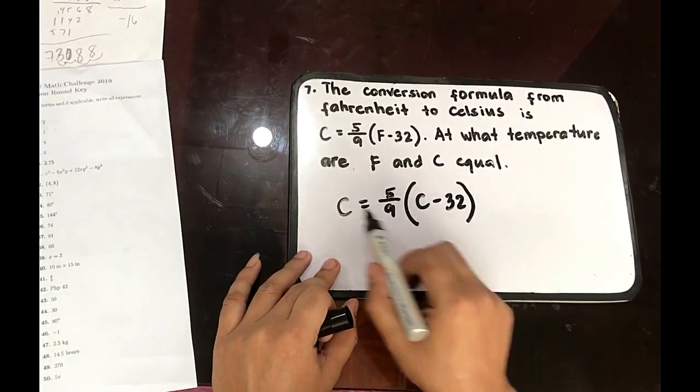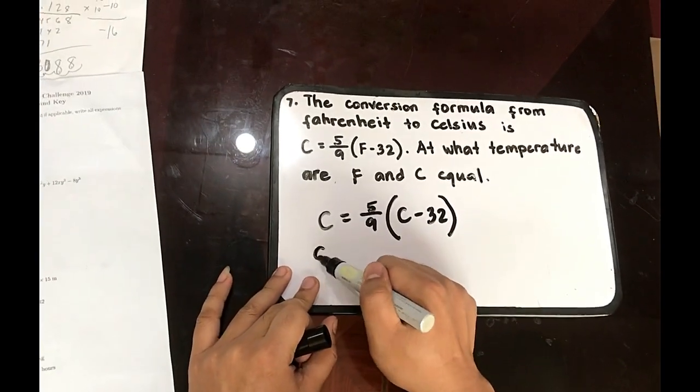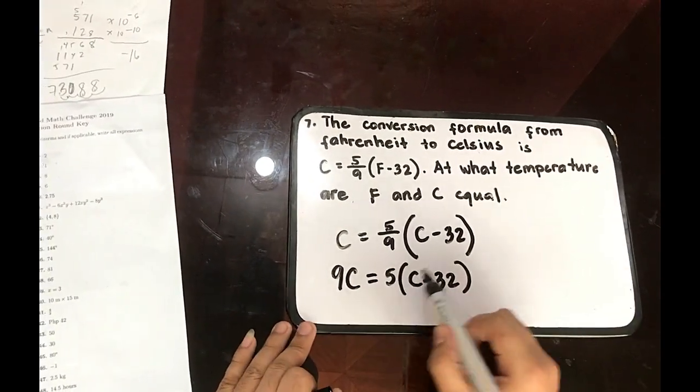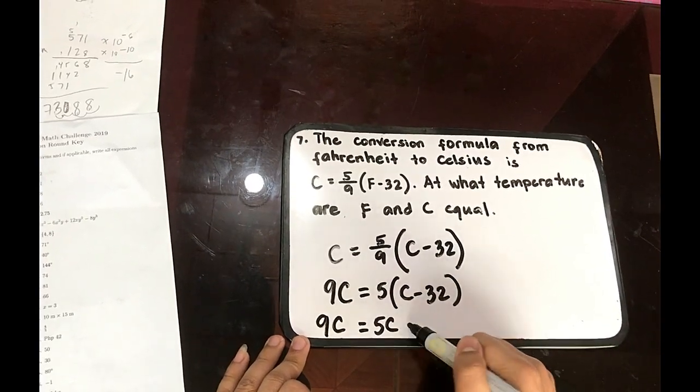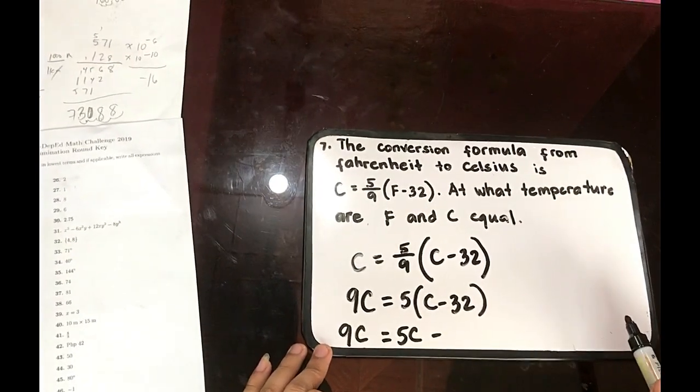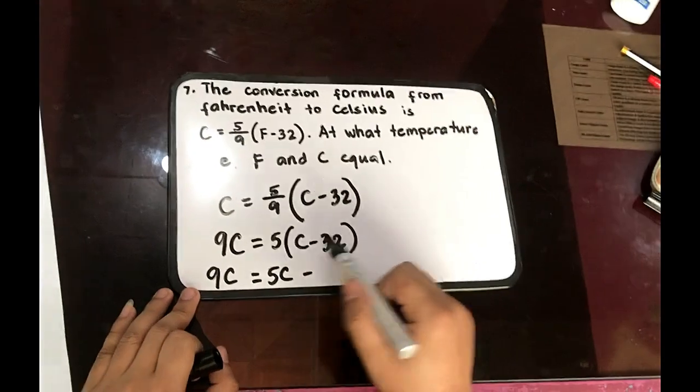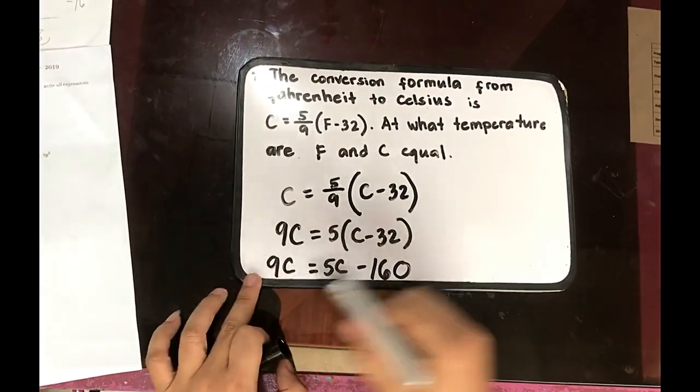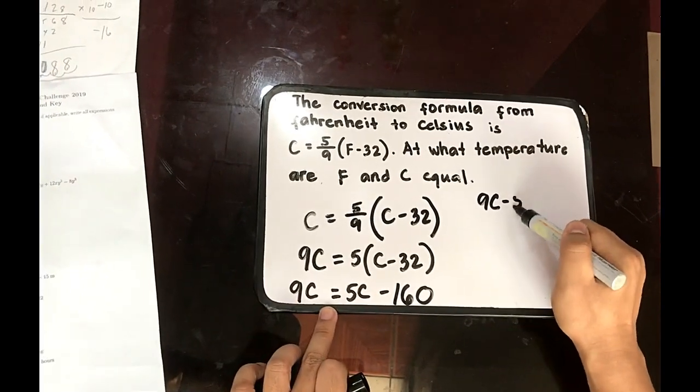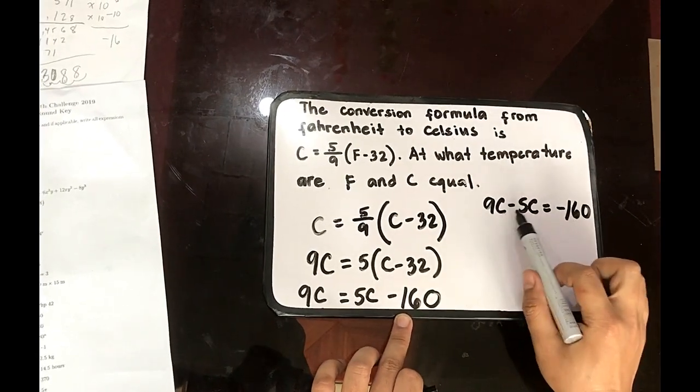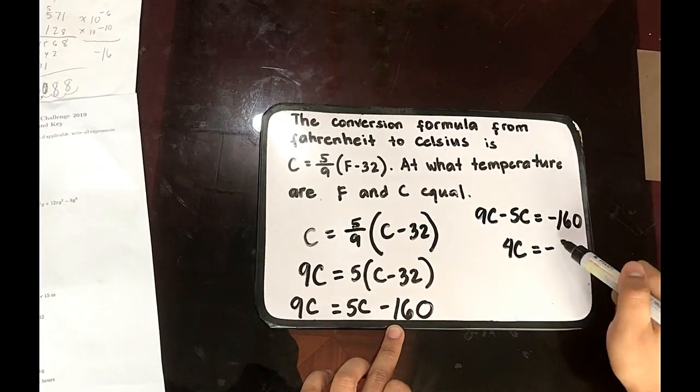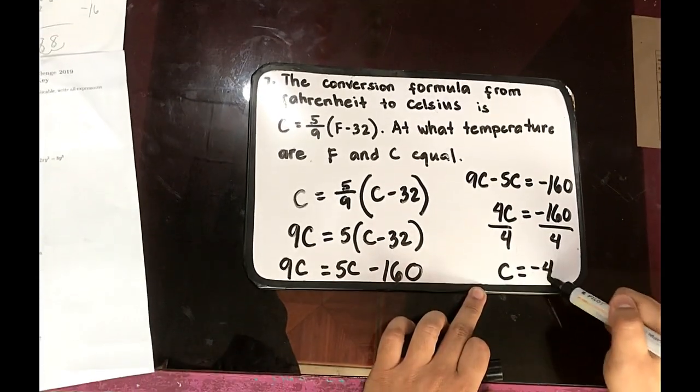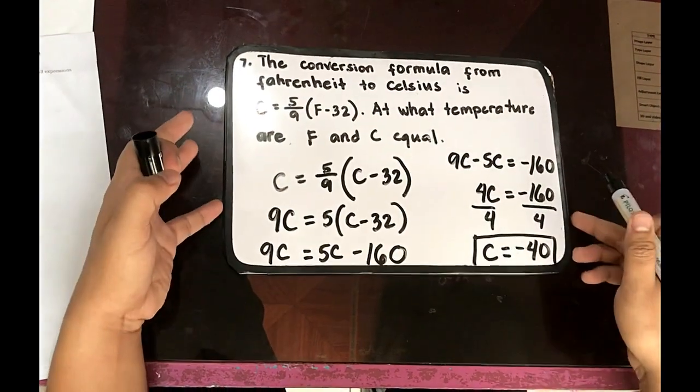Now we can remove 9 by simply cross multiply. So that will give you 9C is equal to 5 times C minus 32. So distribute. 9C is equal to 5C minus 160. So transpose. 9C minus 5C is equal to negative 160. 4C is equal to negative 160. Divide by 4. So our C is negative 40. The final answer. So F and C are equal to negative 40.